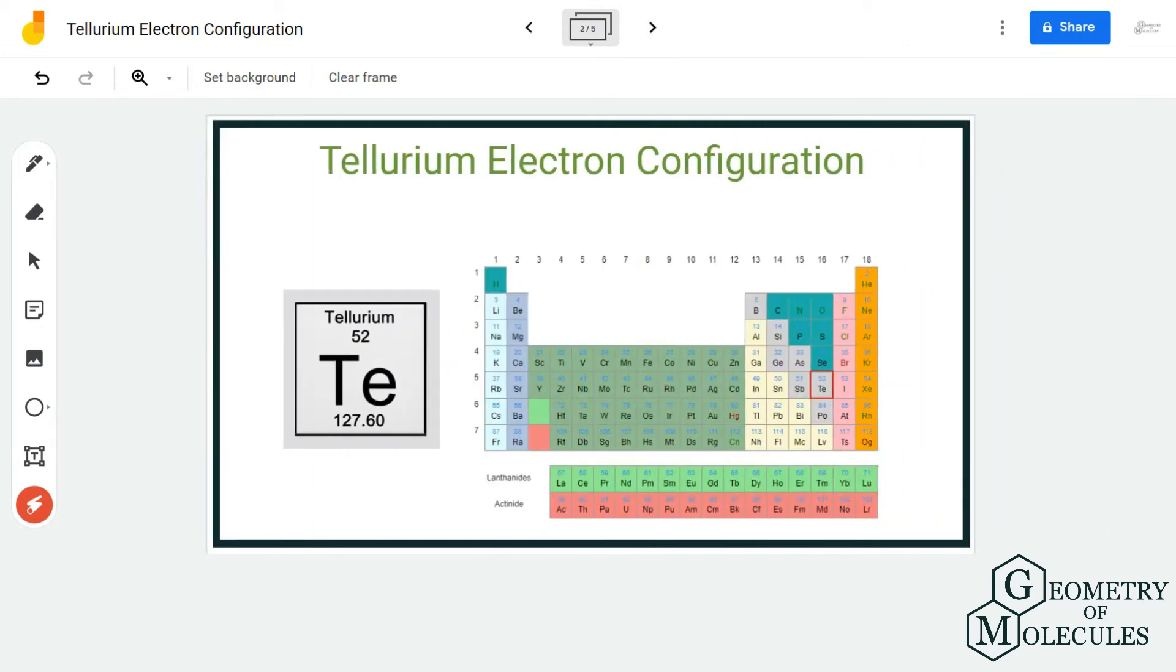Once you know that atomic number, you can know the number of electrons. You can also use this periodic table to determine the atomic number. As we now know that it has 52 electrons, let's start arranging the electrons in the orbitals.